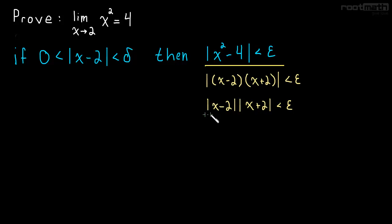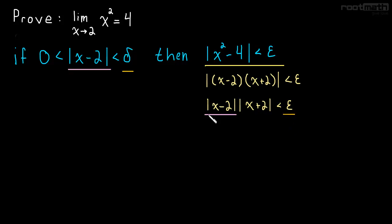Things are looking pretty good, because we have x minus two here and x minus two over there. That means we have control over x minus two. Because we're looking for any delta that works, and if we find a delta that works, any delta smaller than that will also work. We have control over delta — that's the one thing we have control over. We can make it as small as we want, which means we can make the absolute value of x minus two as small as we want. So no matter what epsilon is, we can force x minus two to be smaller than epsilon.